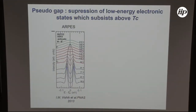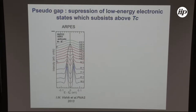The pseudogap phase manifests itself by a suppression of low energy spectral weight above TC. This can be seen on the energy distribution curves obtained from angle-resolved photoemission spectroscopy on a Bismuth-2212 compound. The blue curve corresponds to the superconducting state, showing a superconducting gap opening with loss of spectral weight at low energy close to the Fermi level. As we increase temperature, above TC at 92 Kelvin, we can still see a depletion close to the Fermi level — this is the signature of the pseudogap.